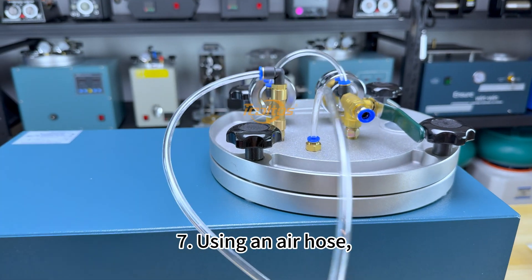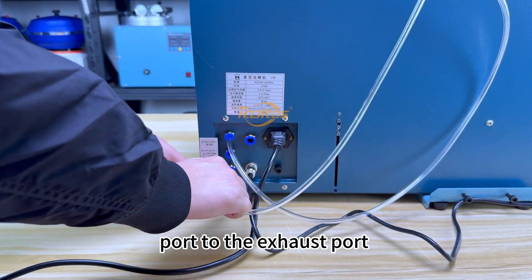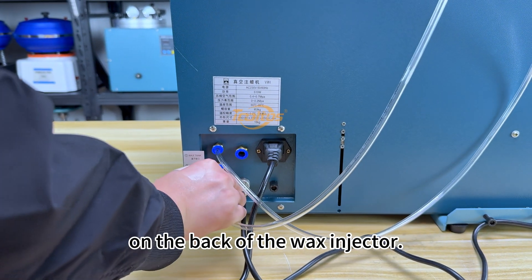7. Using an air hose, connect the wax injector's exhaust port to the exhaust port on the back of the wax injector.